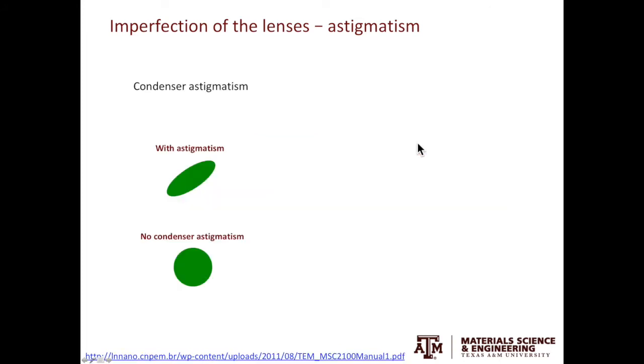In TEM, we mainly deal with two types of astigmatism. The first type is called the condenser astigmatism. When you converge the beam, and if the probe shape is elliptical, then the beam has condenser astigmatism. In contrast, if the beam is circular in shape, then there's no condenser astigmatism.